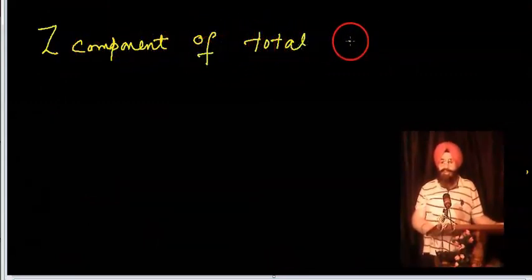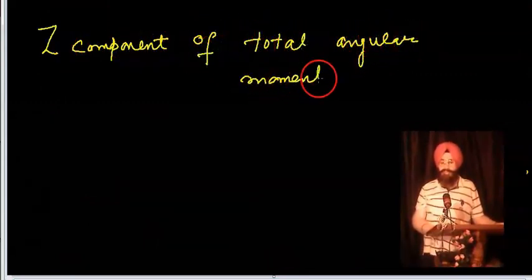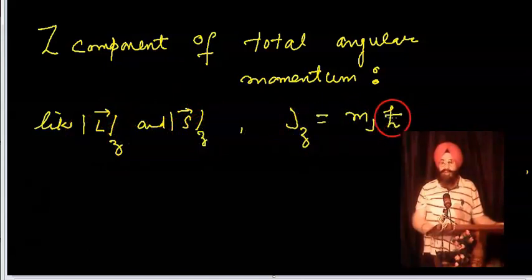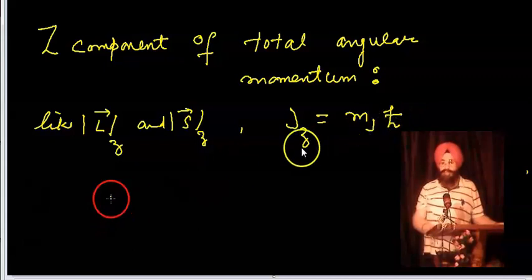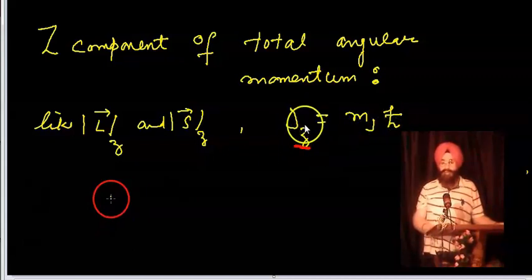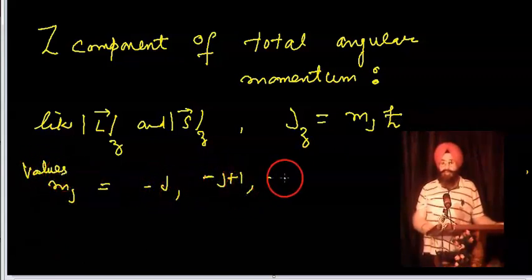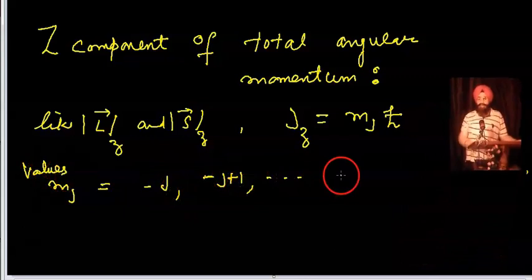Similarly, the z-component of the total angular momentum J_z equals m_j times ℏ. The quantum number m_j similarly has (2j+1) allowed values.